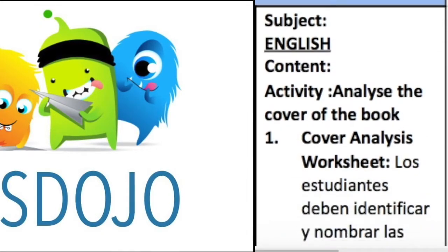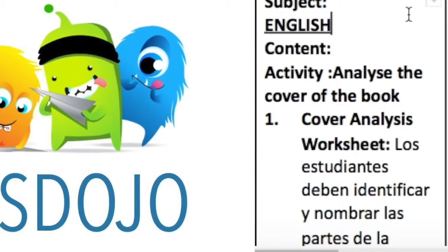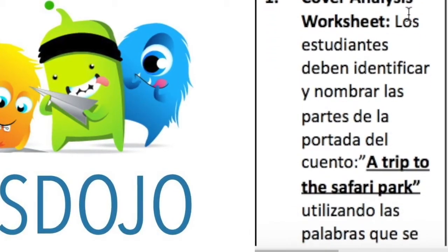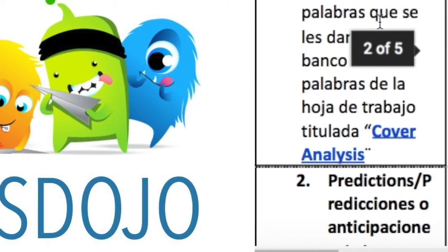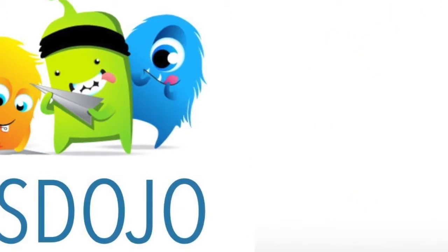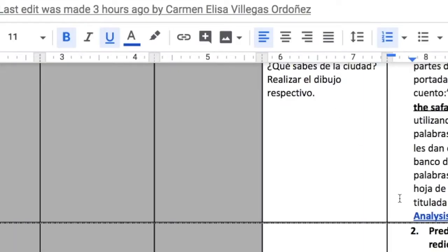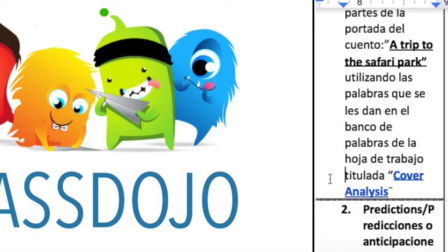Bueno chicos, ahora vamos a hablar de lo que va a pasar en la clase de inglés. Van a encontrar una hojita que se llama Cover Analysis. En esa hojita vamos a analizar la carátula del cuento, del cuento nuestro que se llama A Trip to the Safari Park. Vamos a analizar dónde está situado el título, el ilustrador, el autor y los dibujos de la carátula de nuestro libro. Ahí les damos el banco de palabras para que lo usen.